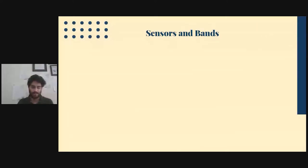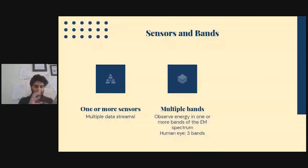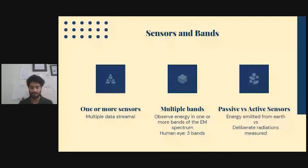Another thing I want to mention here is once you've moved on from deciding satellites and resolutions, you need to decide what kind of data you're looking for. You need to think of the sensors and bands. Any satellite can have one or more sensors, which allows you to have these independent multiple data streams. These sensors themselves can observe energy in multiple bands of the electromagnetic spectrum. To put that in context, the human eye can see three bands: R, G, and B.